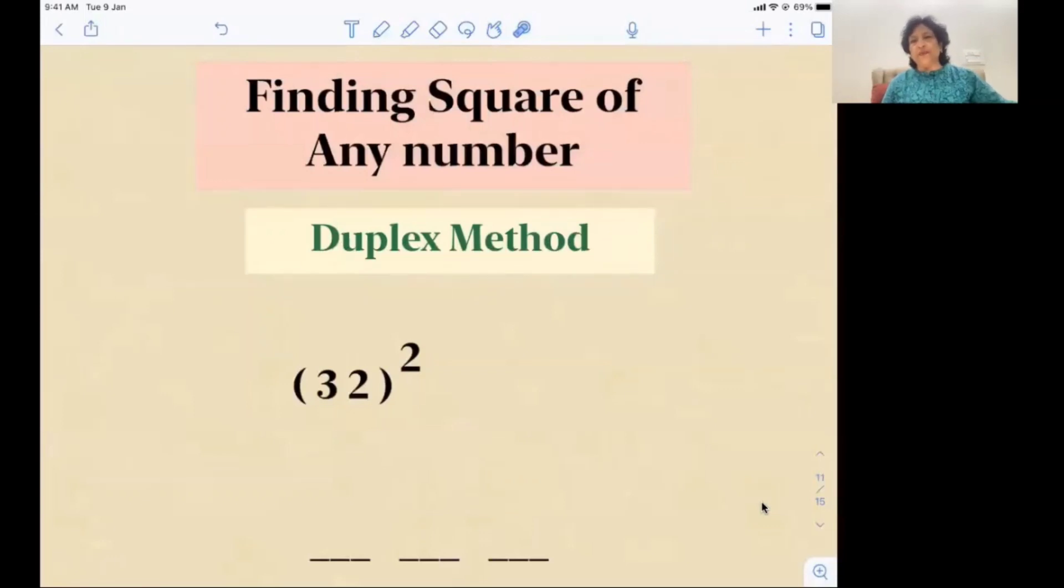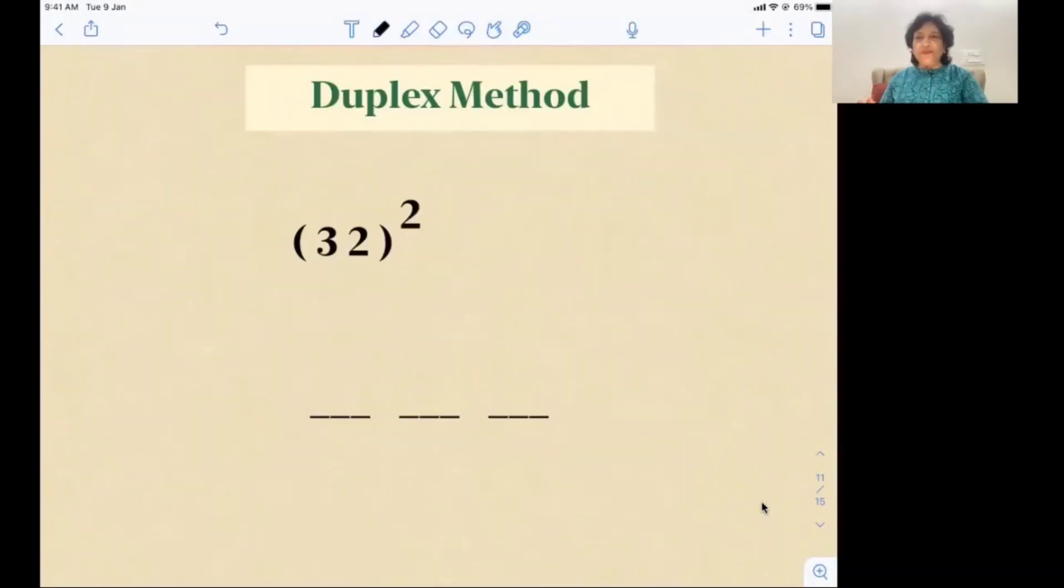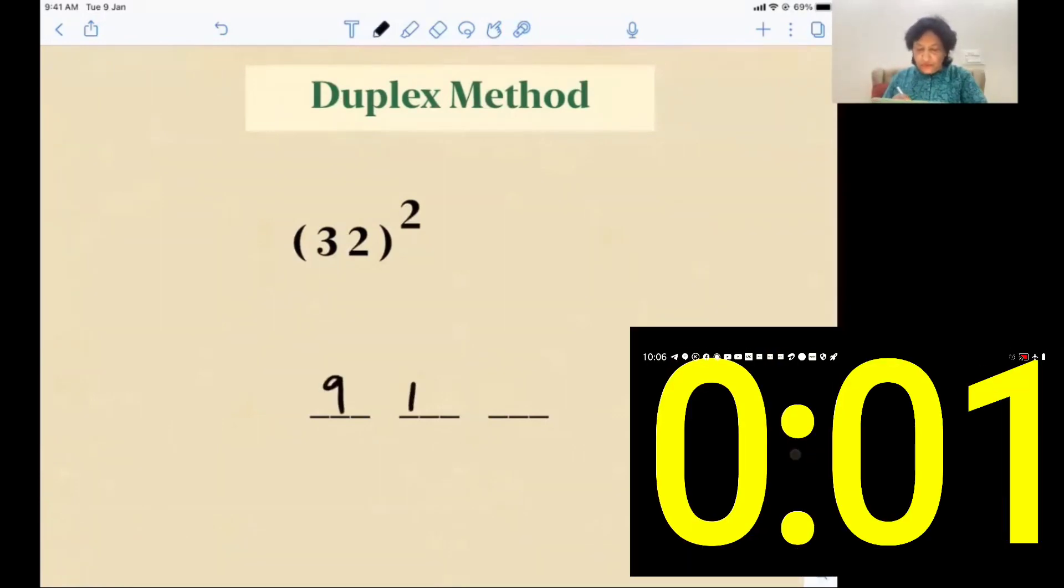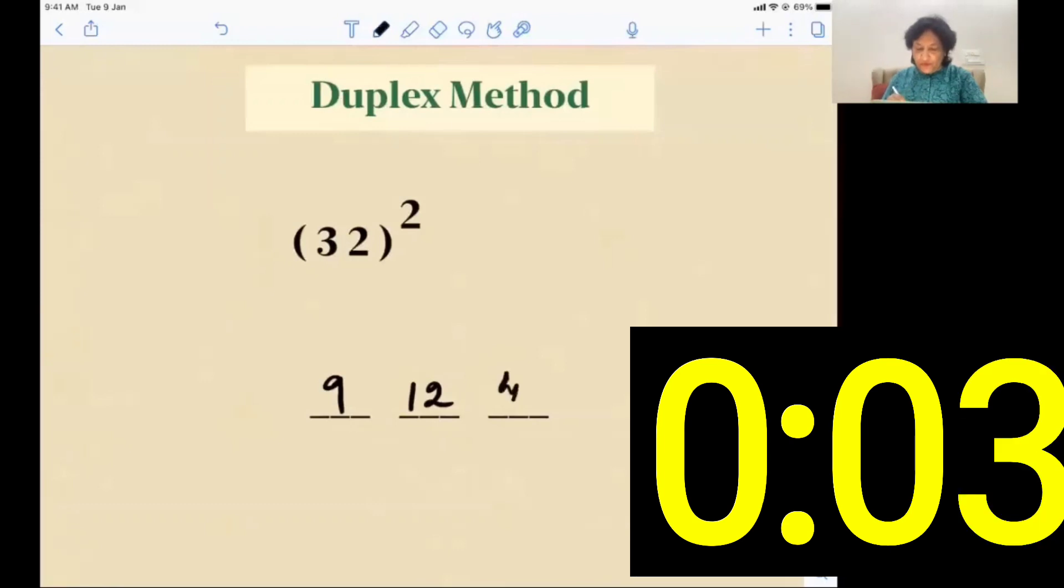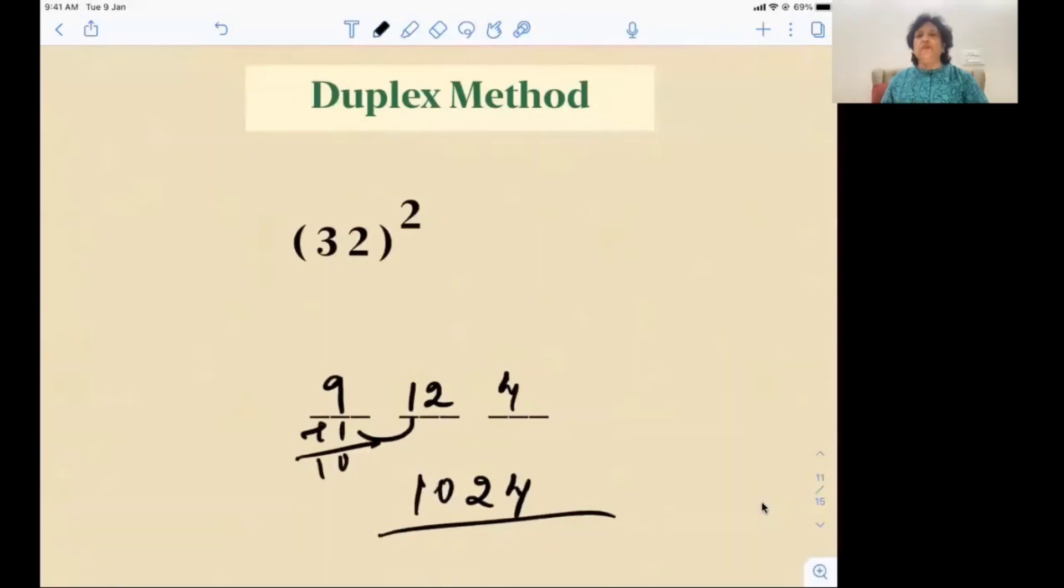Now let's start with the two-digit number 32 squared. Let's shout out the answer: three squared is nine, three into two, six into two is twelve, two squared is four. So four two, this one carried here, ten, one zero two four. This is the answer. Look, we've been able to find the answer in only a few seconds. Is it magic or mathematics?